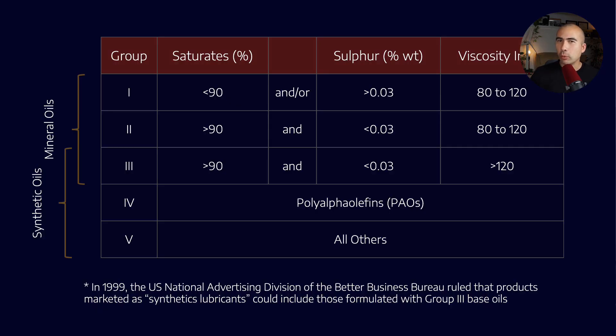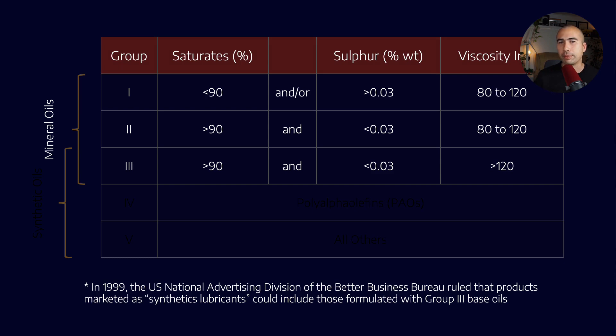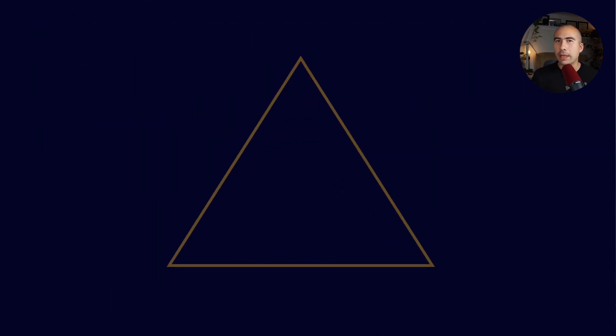Here are the API base oil groups. We know them from Group 1 all the way through to Group 5, and we're going to concentrate just for the moment on the minerals, that is Groups 1, 2, and 3. The mineral base oils are made up of three major molecules, the paraffins, the aromatics, as well as the naphthenes.